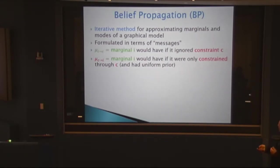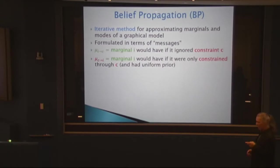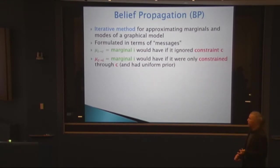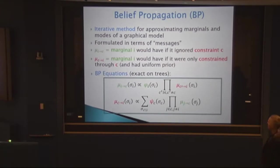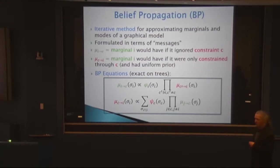There seems to be a natural iterative way to calculate one marginal from the other. I will argue this without being precise, because it is actually not rigorous. On trees, however, it actually is rigorous. If I want to calculate the marginal ignoring constraint c, I look at my prior and then at all other constraints except c. If I want the marginal constrained only through c, I similarly sum over the rest.